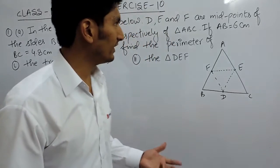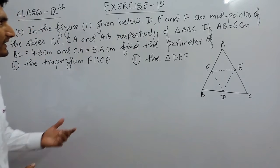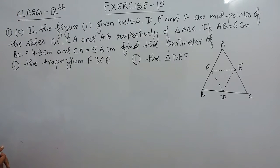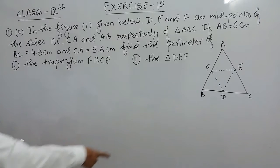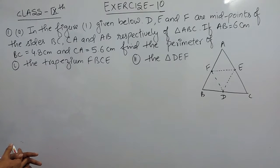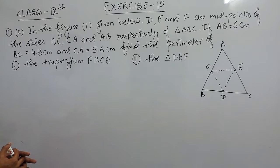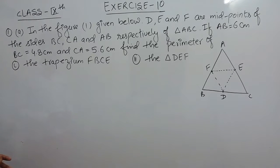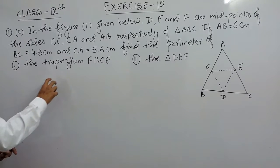Hello everyone. In this video we are going to solve Exercise 10 of Class 9. In the first question, it is given that in the figure, D, E, and F are the midpoints of sides BC, CA, and AB respectively in triangle ABC. The measures given are AB = 6 cm, BC = 4.8 cm, and CA = 5.6 cm.